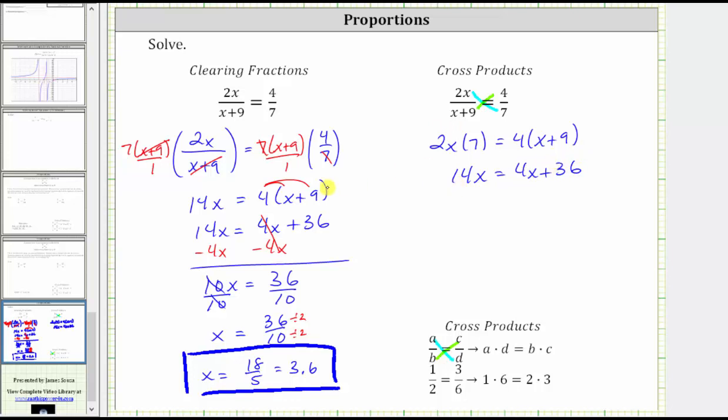Notice how this is the exact equation we had here once we cleared the fractions from the rational equation. So of course we subtract 4 on both sides, giving us 10x equals 36.